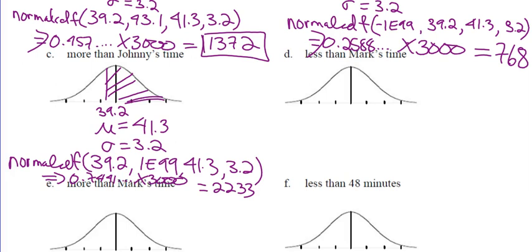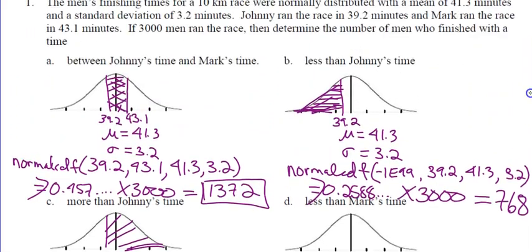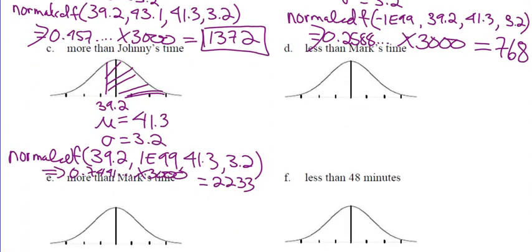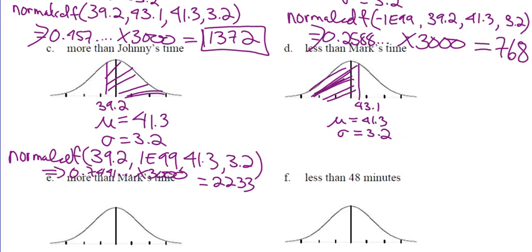Now if we add 2,233 to the 768 from above, we're going to end up with 3,001 men when there are only 3,000 — because we know we're just rounding up to the nearest full person, so we end up taking an extra person into account. Mark ran the race in 43.1. So there's Mark at 43.1, mean is 41.3, standard deviation 3.2. Less than Mark's time is below — give it a shot.